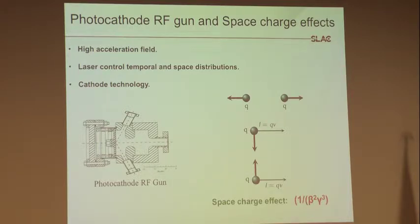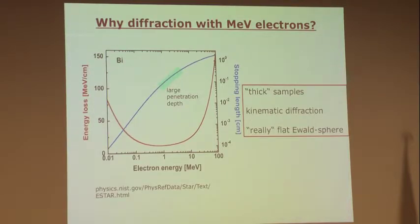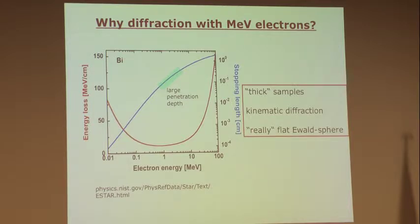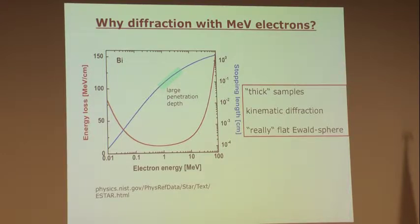Besides improved temporal resolution, are there other benefits? In electron microscopy, MeV electrons allow you to handle thicker samples — from 20 nanometers up to a couple hundred nanometers thick. Because of the high energy, there is less multiple scattering, which allows quantitative comparison between experiment and theory to interpret the physics.